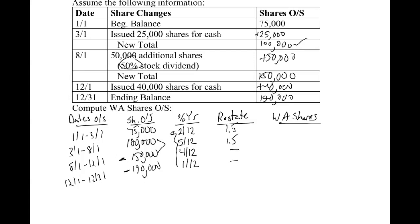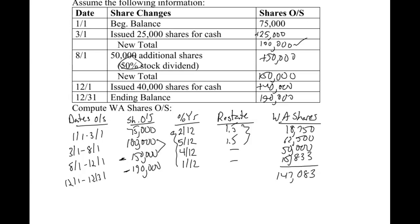Now I'll multiply across all columns, including the 1.5 restate factor where applicable. That gives me 18,750 for the first row, 62,500 for the second, 50,000 for the third, and 15,833 for the fourth. My total weighted average shares outstanding is 147,083. That would be the denominator used in the basic earnings per share calculation.